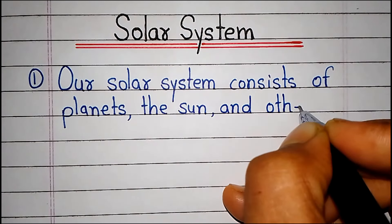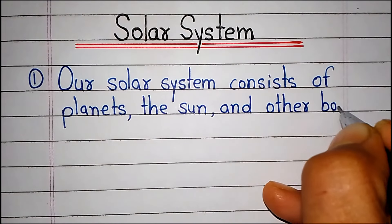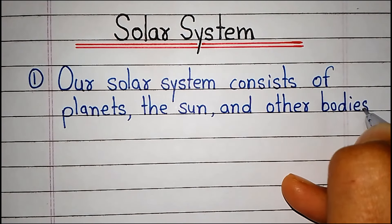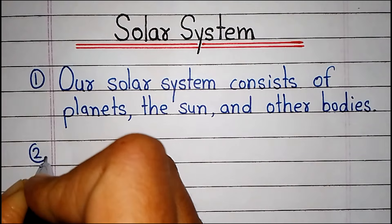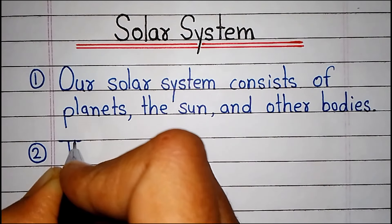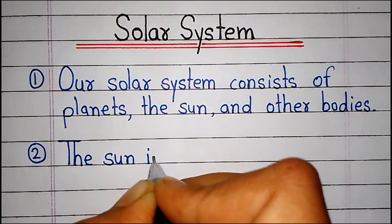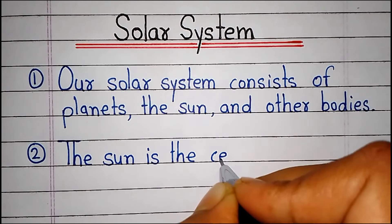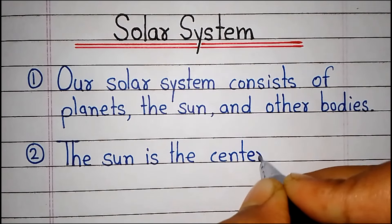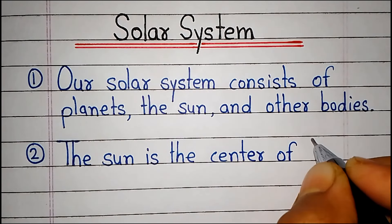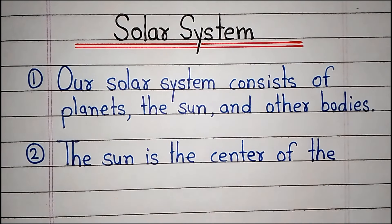Our solar system consists of planets, the sun and other bodies. The sun is the centre of the solar system.